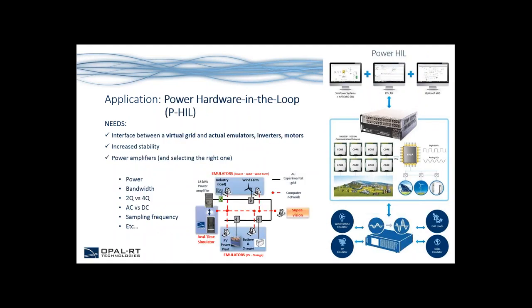One well-known application is Power Hardware-in-the-Loop (PHIL). For microgrids, this involves an interface between a virtual grid and actual emulators, inverters, and motors. We need increased stability due to the fact that power amplifiers are in the loop. One challenge is selecting the right power amplifier based on your needs — considering power, bandwidth, two-quadrant versus four-quadrant, AC versus DC, and sampling frequency. At Opal RT, we work with various third-party amplifier manufacturers to help you select the right one. The real-time simulator simulating the virtual grid interfaces with a power amplifier, which connects to wind turbine emulators, PV emulators, grid loads, motors, and inverters.